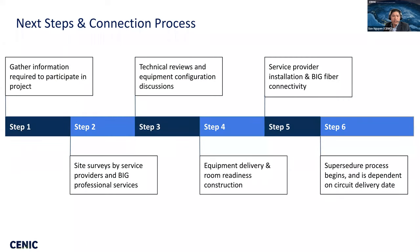There are six steps to get connected. First, we will collect site information through the survey. Then we will schedule a site survey to see if any MEC-ready work needs to be done. After that, we will work with you on technical planning and placing an order with a carrier. Then we will collaborate for equipment delivery and room readiness construction if needed. Then we will start implementing once a circuit is delivered, after which you can start using your new broadband connection. The last step is Supercedure — we will transfer the contract to you and you will be responsible for the service charge.